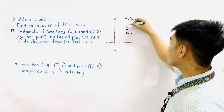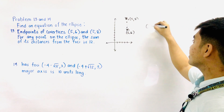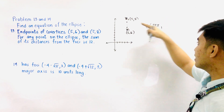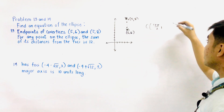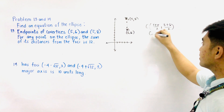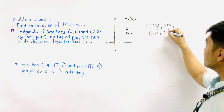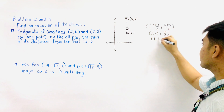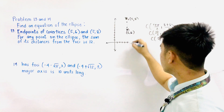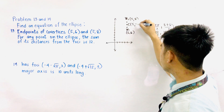We are given co-vertices, so their midpoint is the center. Therefore, the center would be (5+5)/2 for the x-coordinate, and (8+6)/2 for the y-coordinate. That gives us 10/2 and 14/2. Therefore, the center is located at (5, 7).